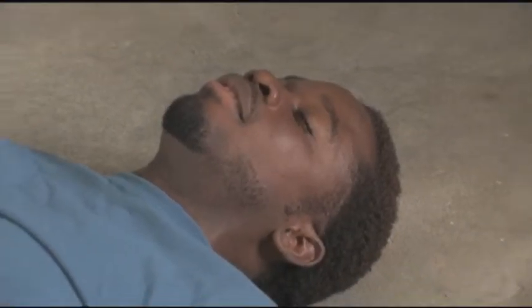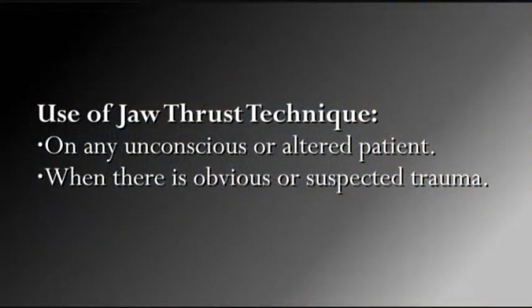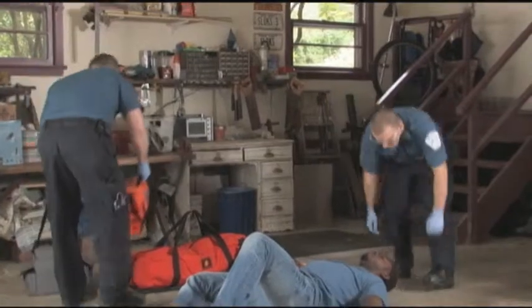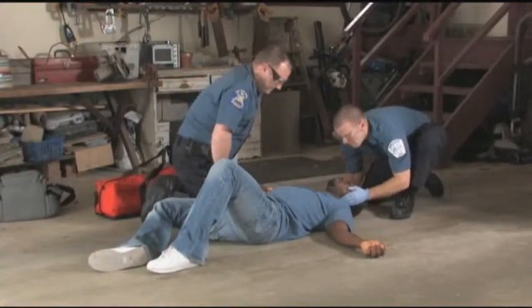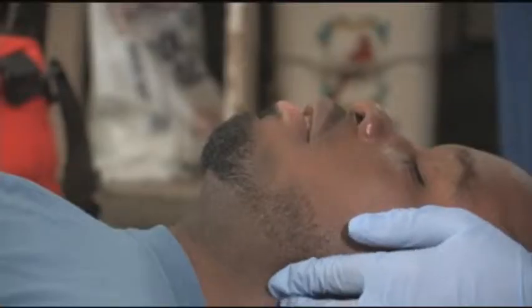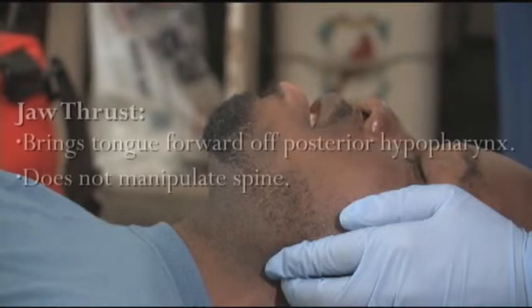The jaw thrust technique is used to open the airway of an altered or unconscious patient with obvious or suspected trauma. Any patient who presents with an altered level of consciousness or is found unresponsive on the ground without an explanation is presumed to have a head, neck, or spinal injury and must have their spine protected. While opening the airway is essential, it is not more important than protecting the spine. Both elements of the patient's care are of high priority, and therefore we accomplish each element with the jaw thrust maneuver. The jaw thrust maneuver is the only procedure used by EMTs to open the airway with little to no movement of the head or neck.